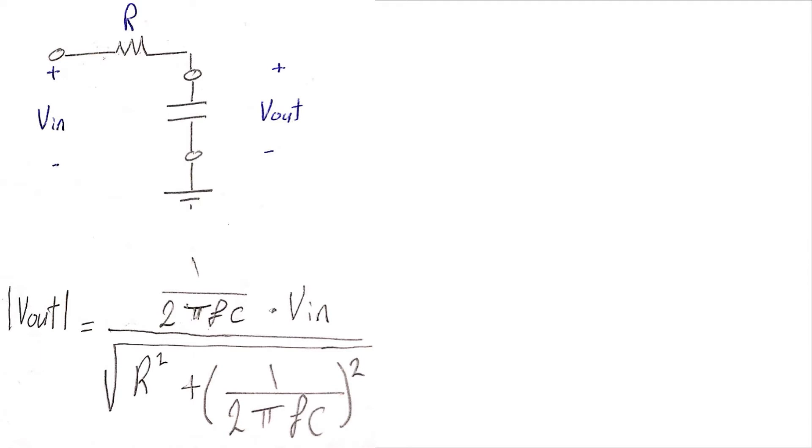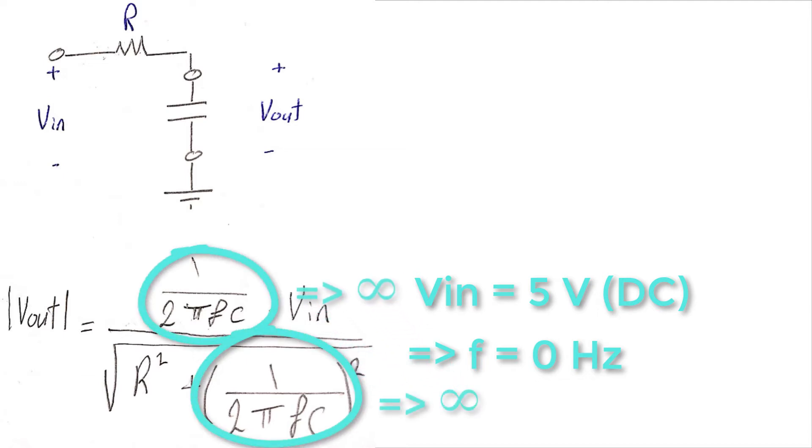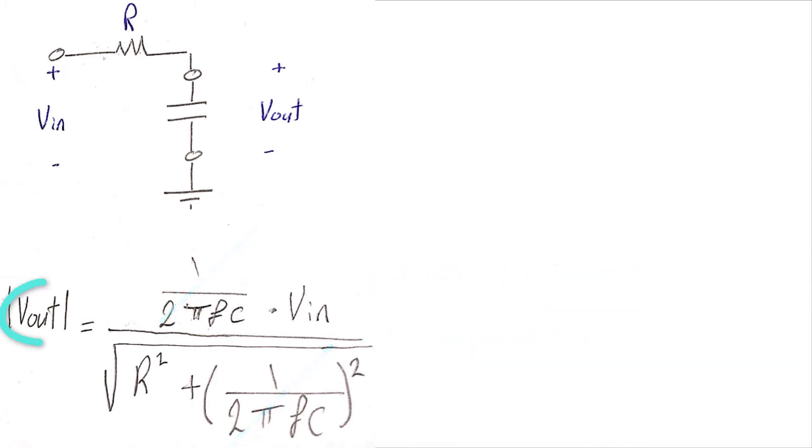After that, we determine the filter behavior at low frequencies and high frequencies to be able to draw the frequency response of it. Let's start by applying DC voltage at the input, which has zero frequency. By applying the output voltage amplitude formula, these two parameters will go to infinity and large numbers will cancel out. So we can see that the output voltage amplitude is equal to the input voltage amplitude. On the other hand, by applying a signal with a very high frequency at the input, we can see that this term goes to zero, which will lead the output voltage to go to zero as well.